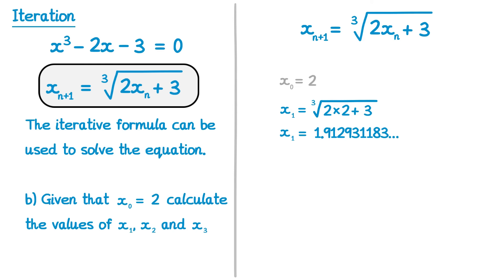We can now use this value for x1 to get the next value for x2. So imagine x1 is our current term. x2 is our next term. So we're going to do the cube root of 2 times our current term, which is x1, and then add 3. So we substitute x1 for this long number here.